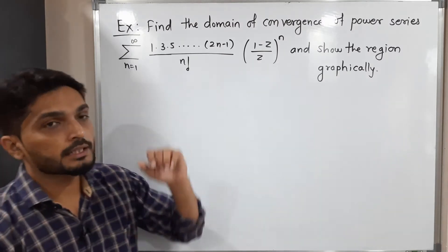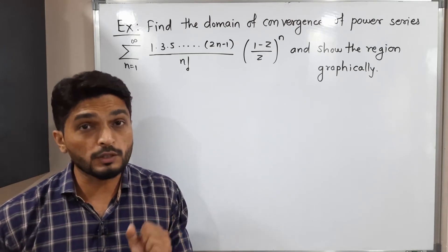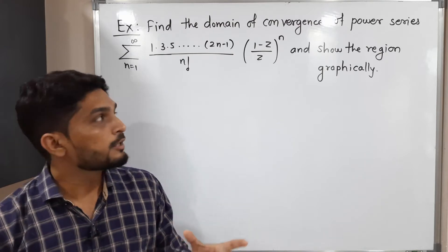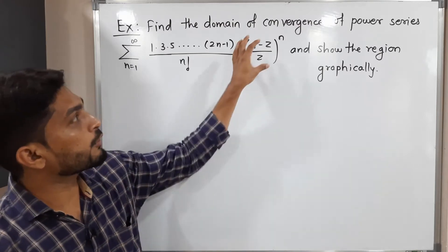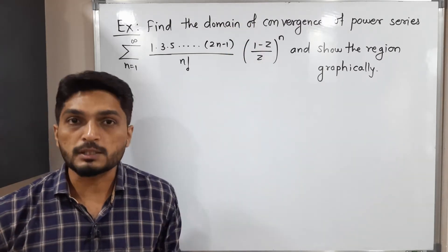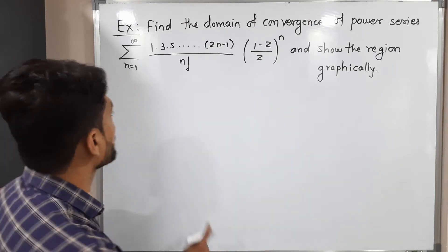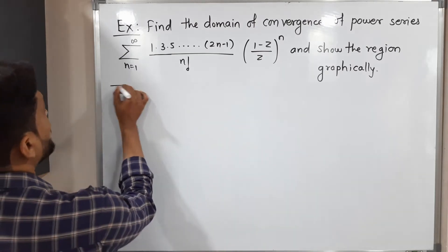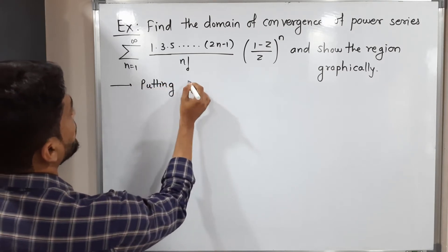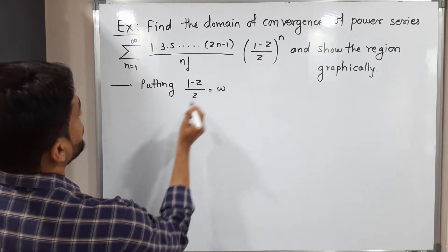This power series looks a little complicated since the term (1 minus z) upon z is there. Normally we have z raised to n, but instead we have that bracket raised to n. To make it simpler, I am putting (1 minus z) upon z equal to w.